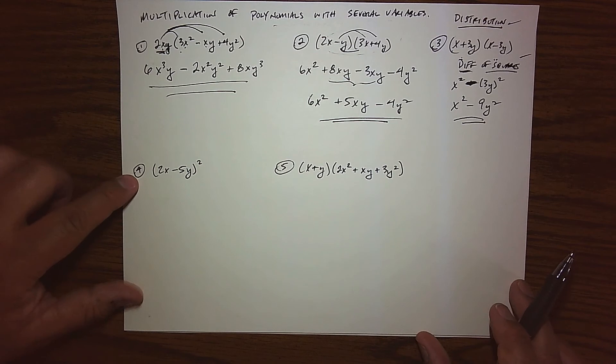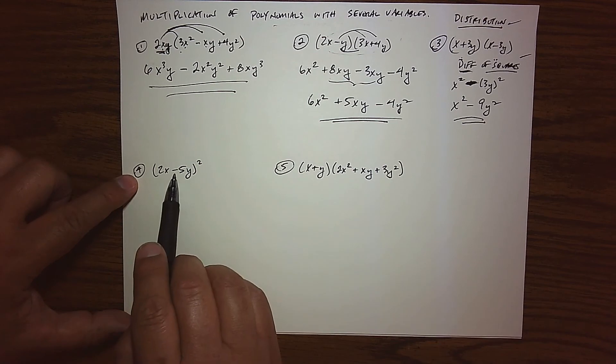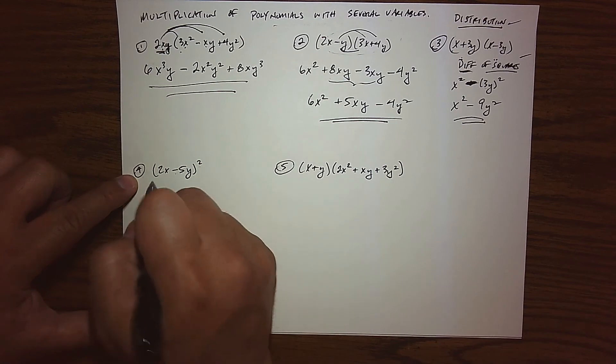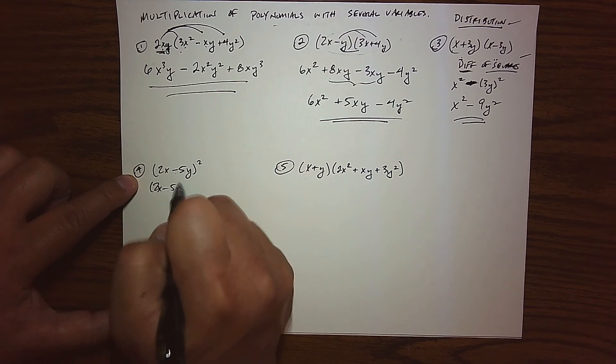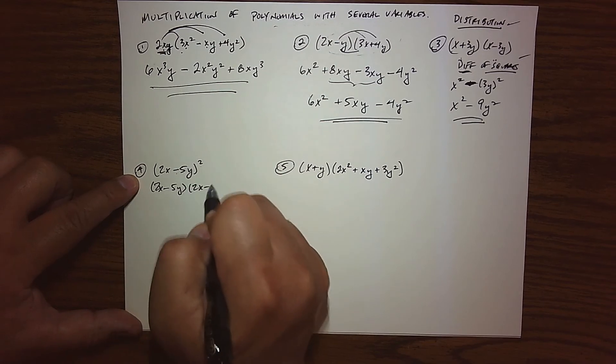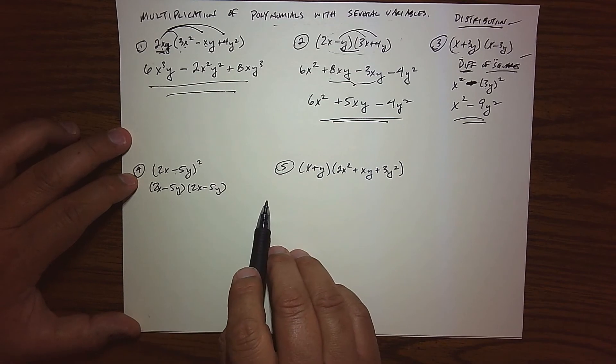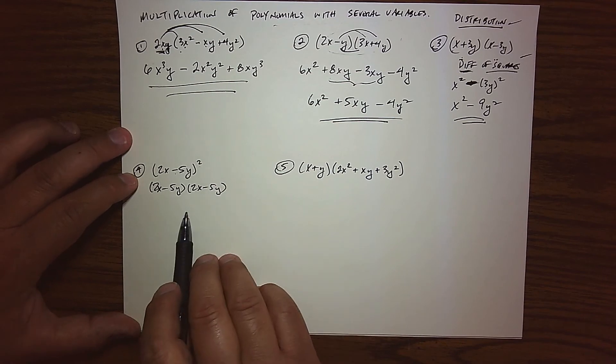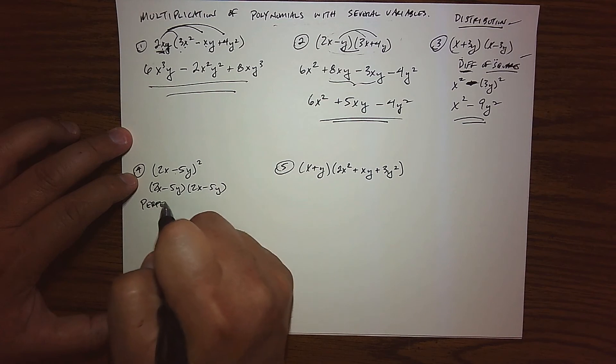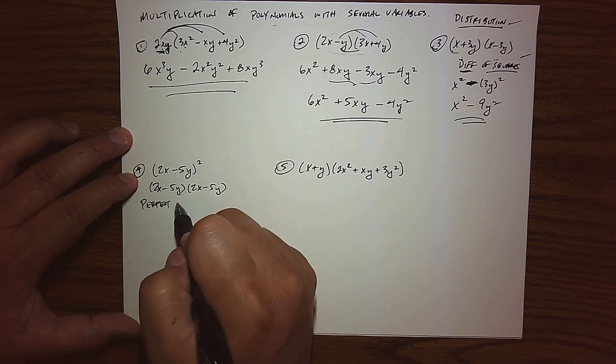So number four, what I'm doing is taking a difference in squaring it. So we know that to be 2x minus 5y times 2x minus 5y. So you can either FOIL that out, or you can use the perfect square trinomial. So I'm going to choose to use that.